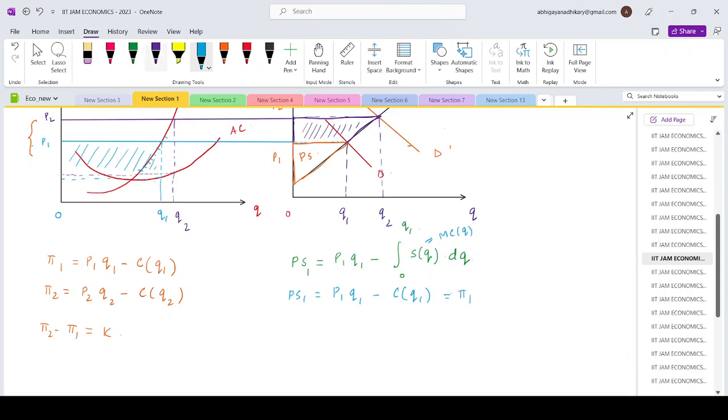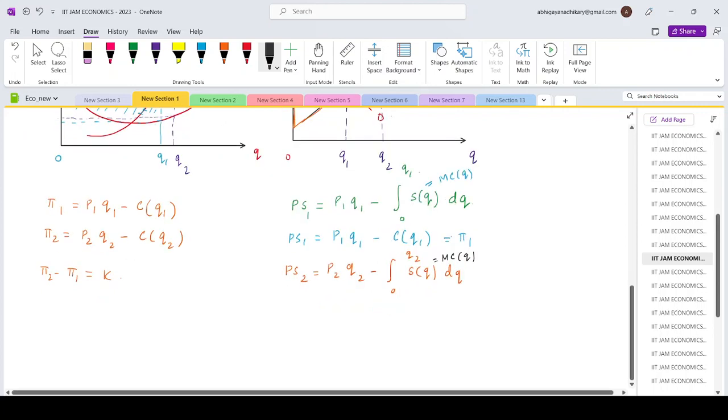Similarly, if you take PS2, that would be P2·Q2 minus integration from 0 to Q1, S as a function of Q dQ. Over here also, since the positively sloped part of the marginal cost curve will act as a supply, your PS2 will be P2·Q2 minus C of Q2. So this is π2.